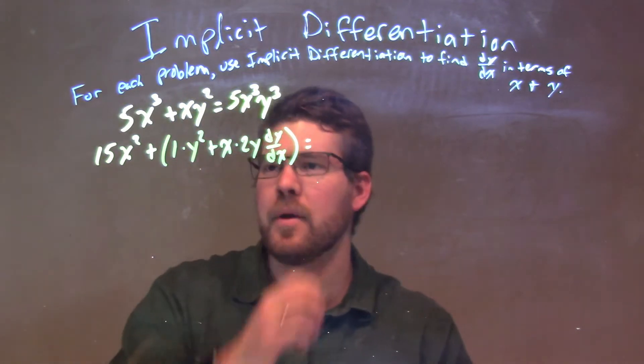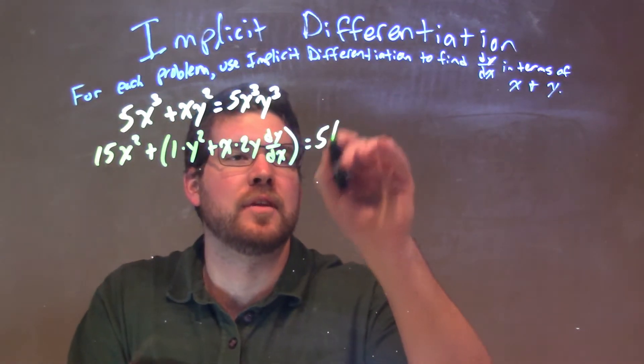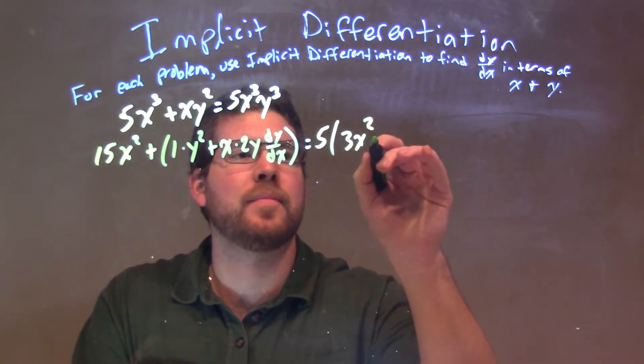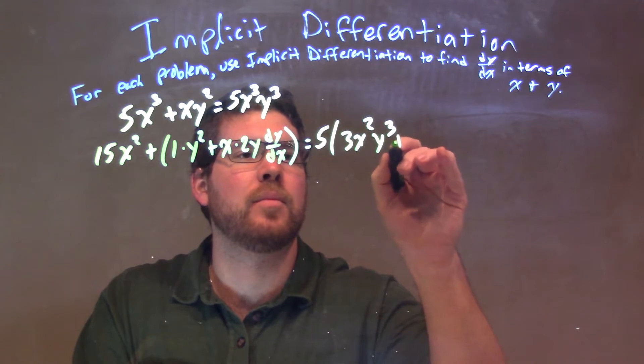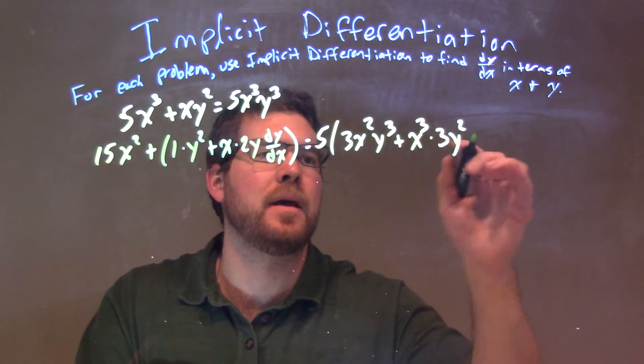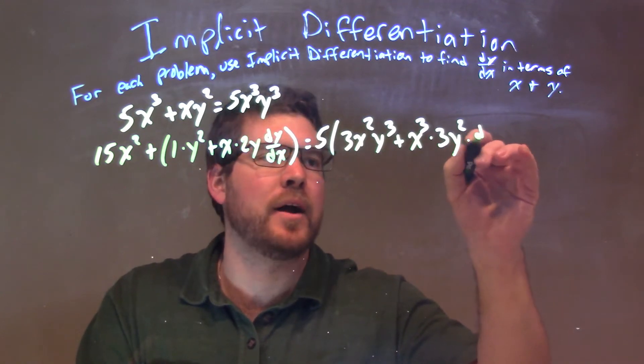Right-hand side, same thing, but let's go pull out the 5 as a constant, just leave it out there this time. Now, we have 3x squared, y to the third, plus x to the third times 3y squared, times dy/dx.